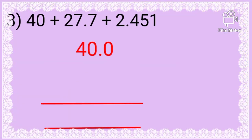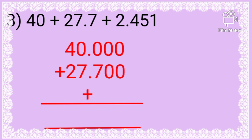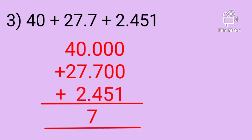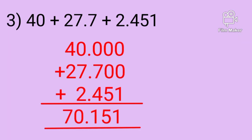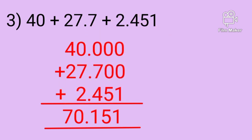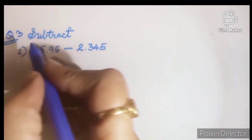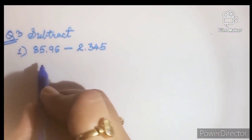See the third question: 40 plus 27.7 plus 2.451. We put the same place values one upon the other and add them.